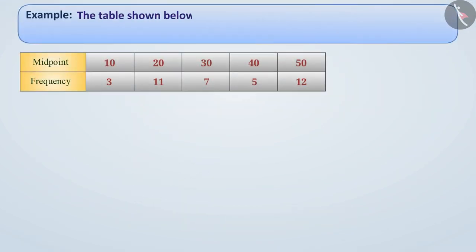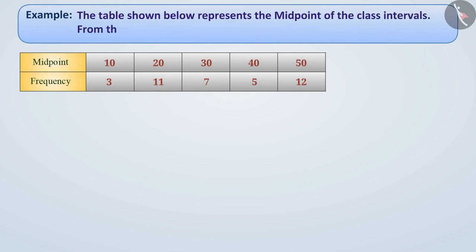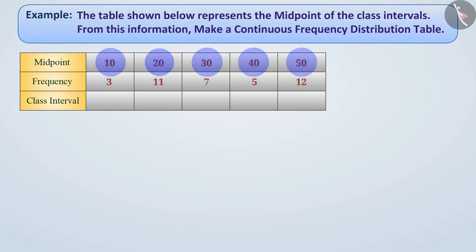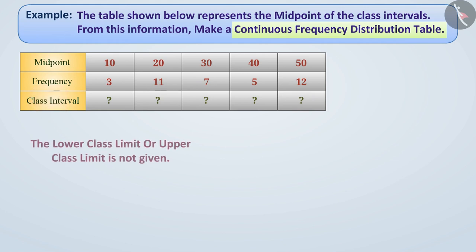Example: The table shown below represents the midpoint of the class intervals. From this information, make a continuous frequency distribution table. The midpoints of the class intervals are shown in the given table. To make a continuous frequency distribution table, we need to find the class interval. We are not given the lower class limit or upper class limit of any class interval. Can you tell how we would find the class interval in this case?